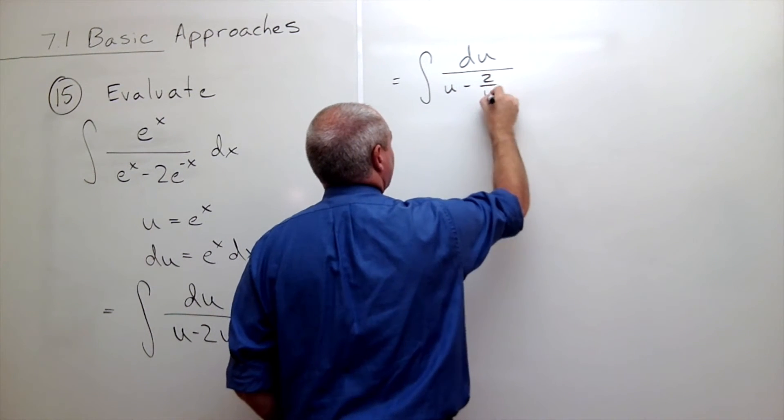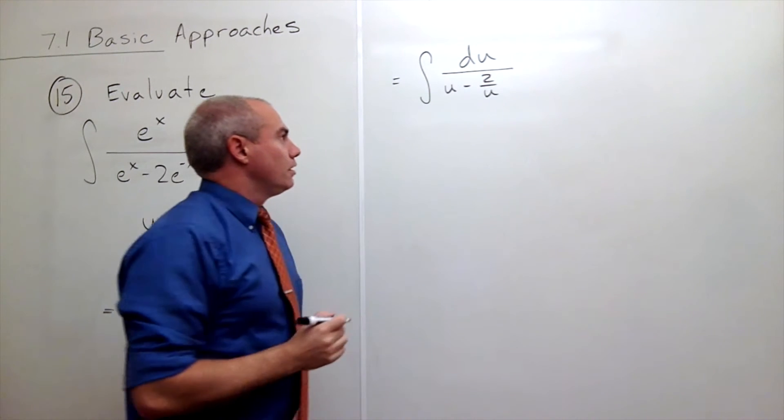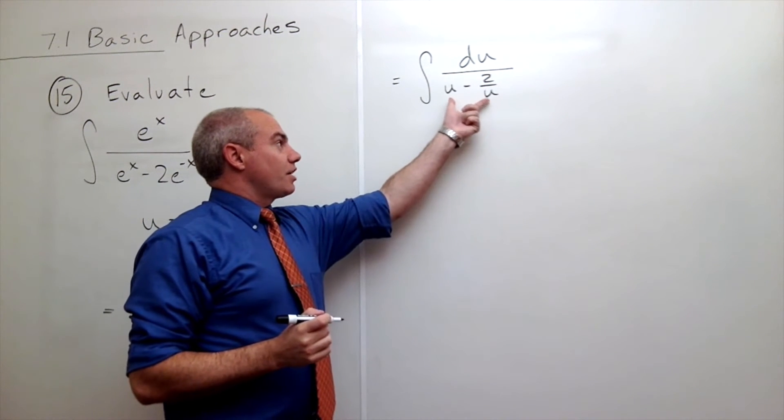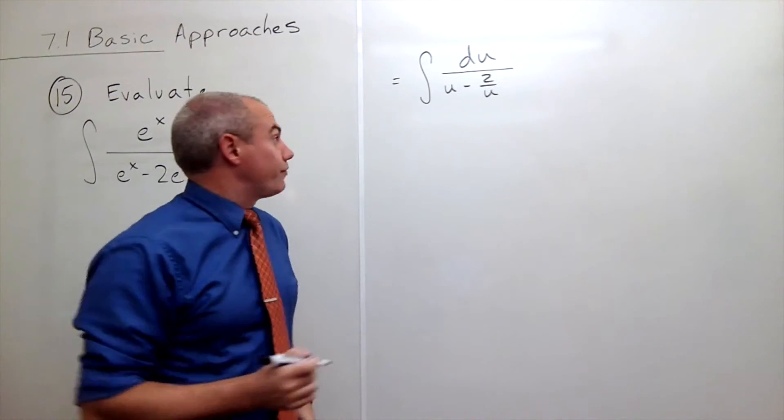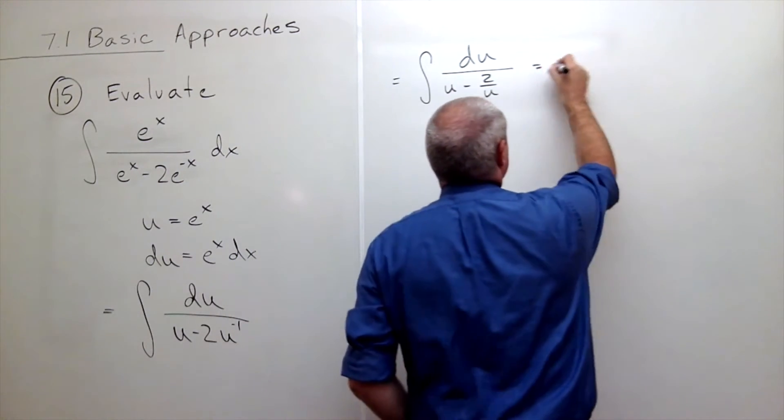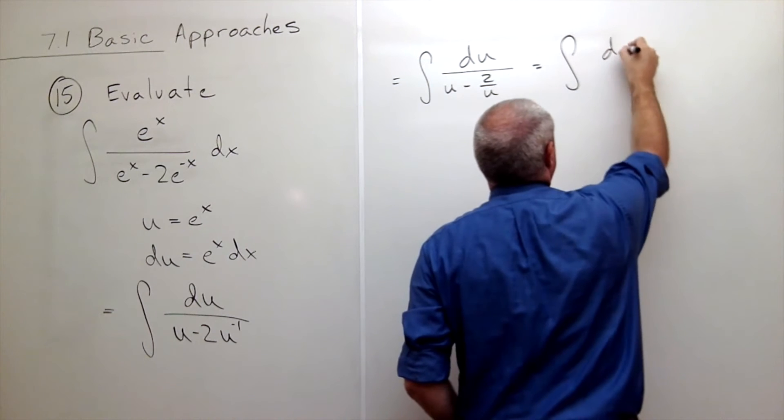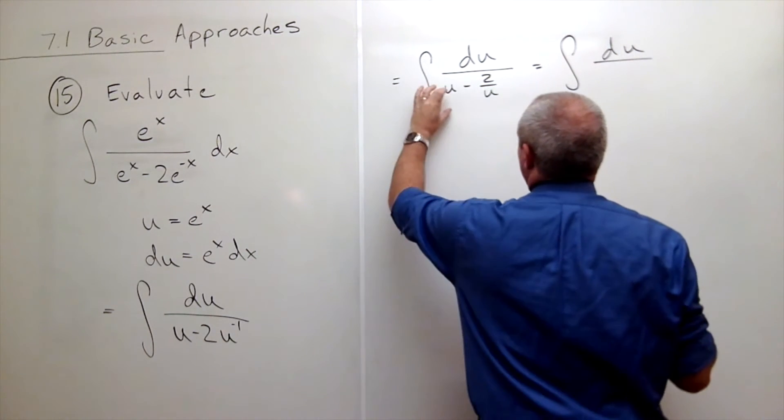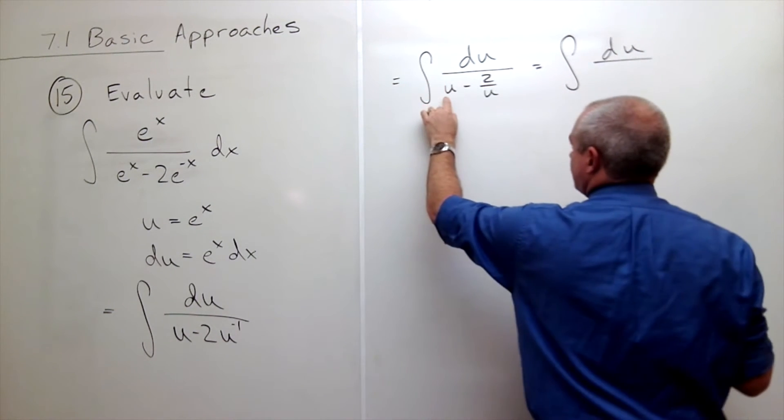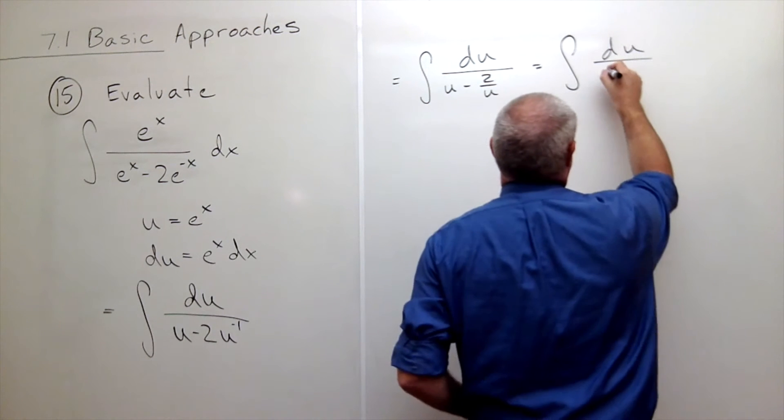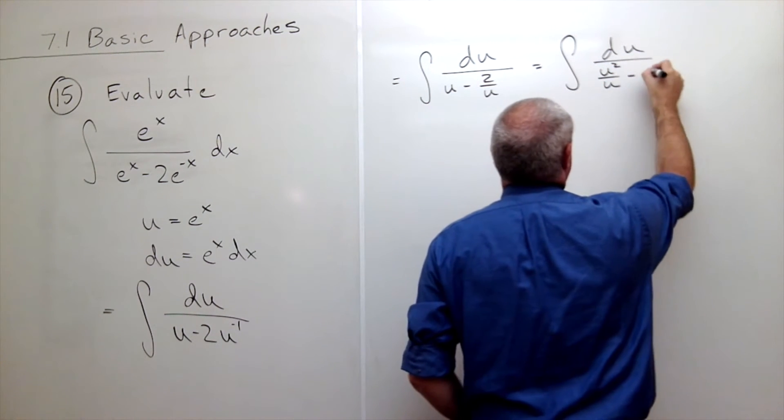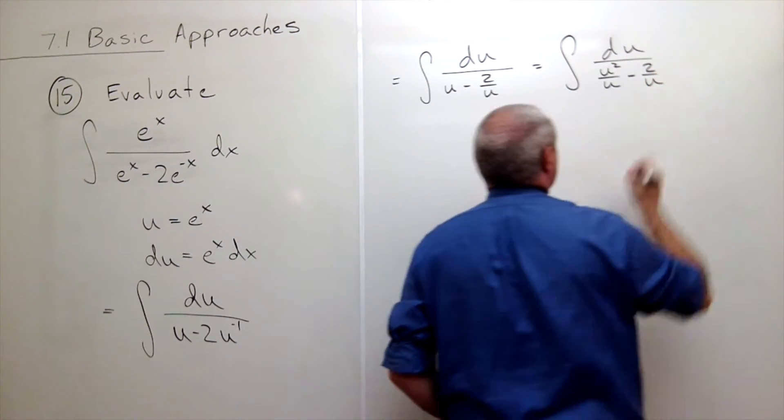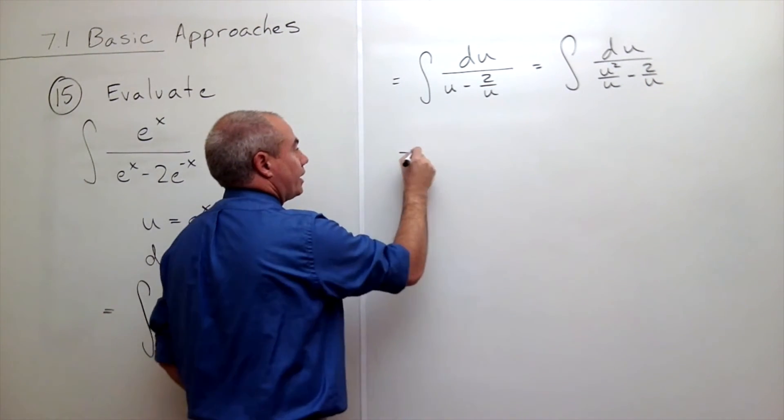Now what I'll do is let's get a common denominator for these two guys, combine them into one fraction. If I do, I get the integral of du over, I'll multiply the top and the bottom of this u by u, so I get u squared over u minus 2 over u.